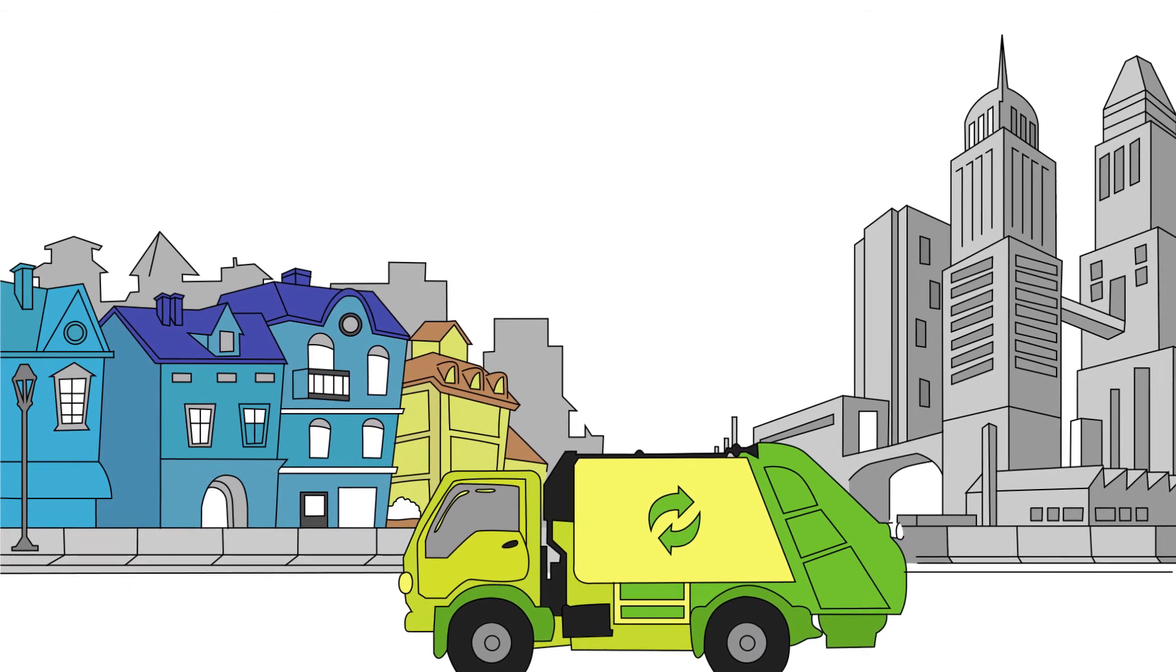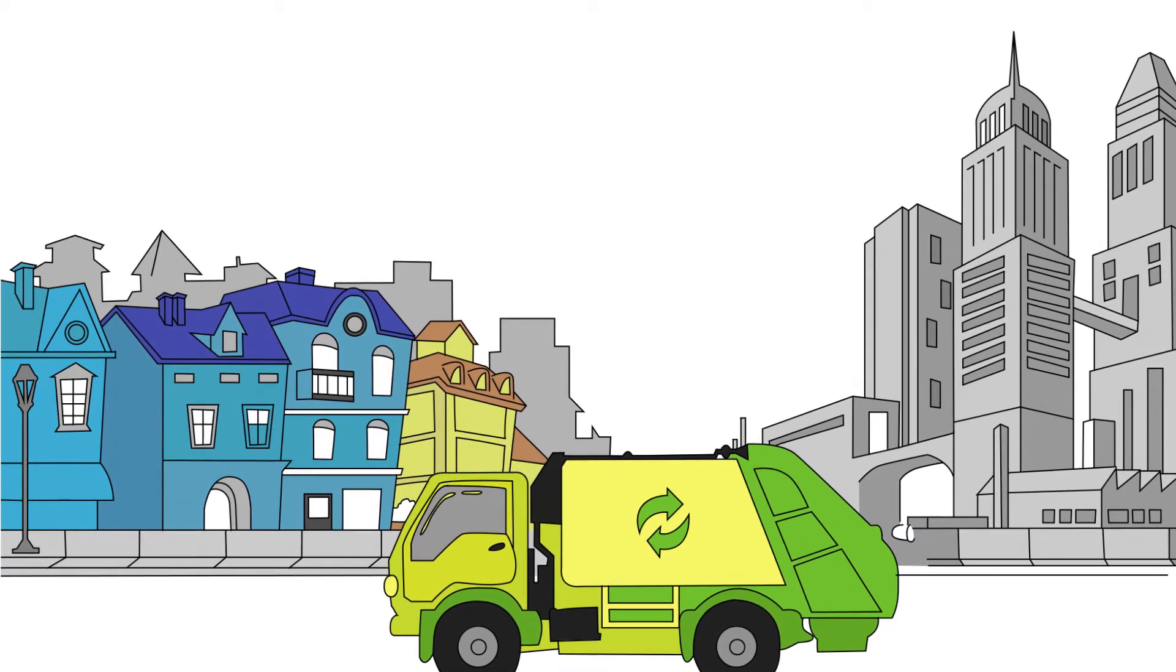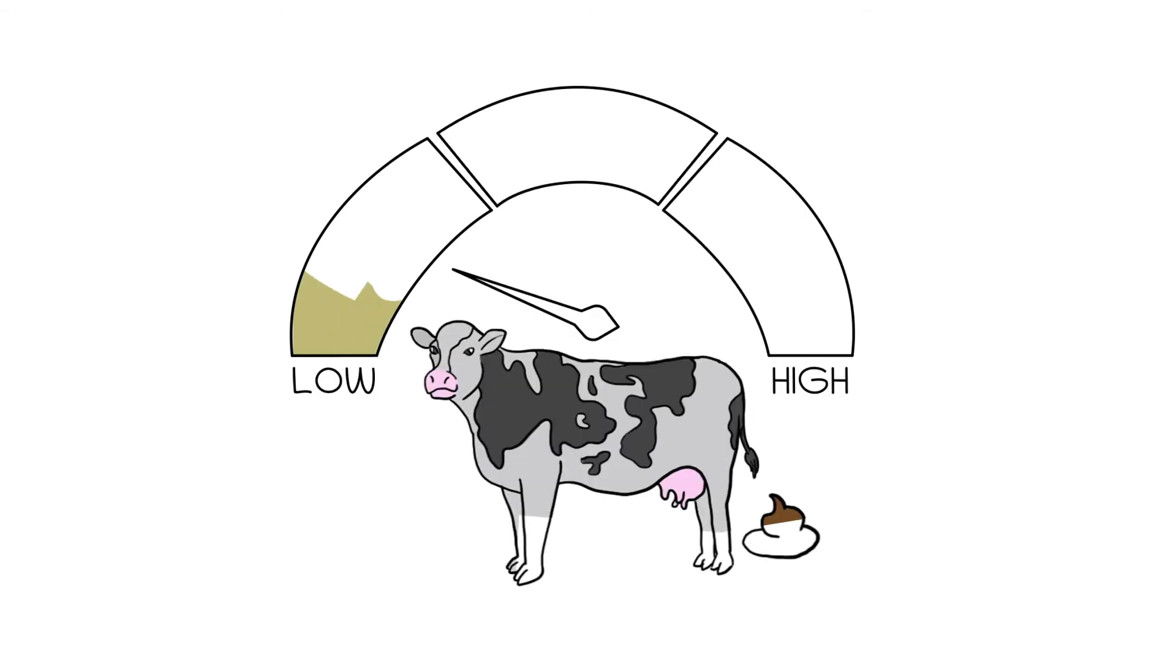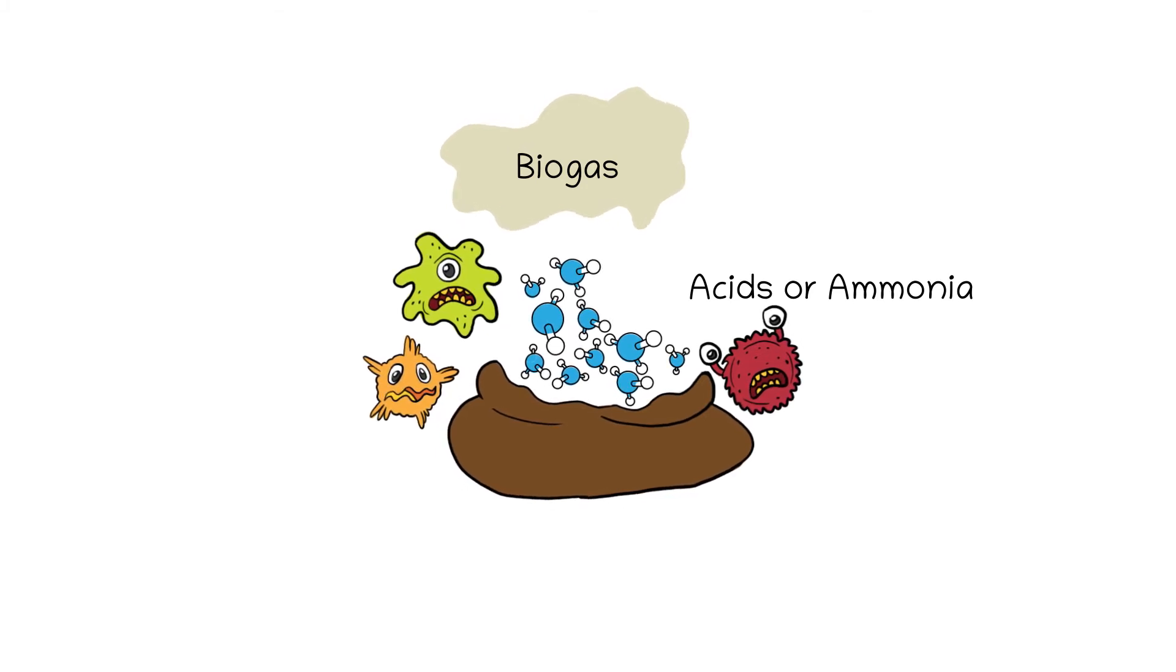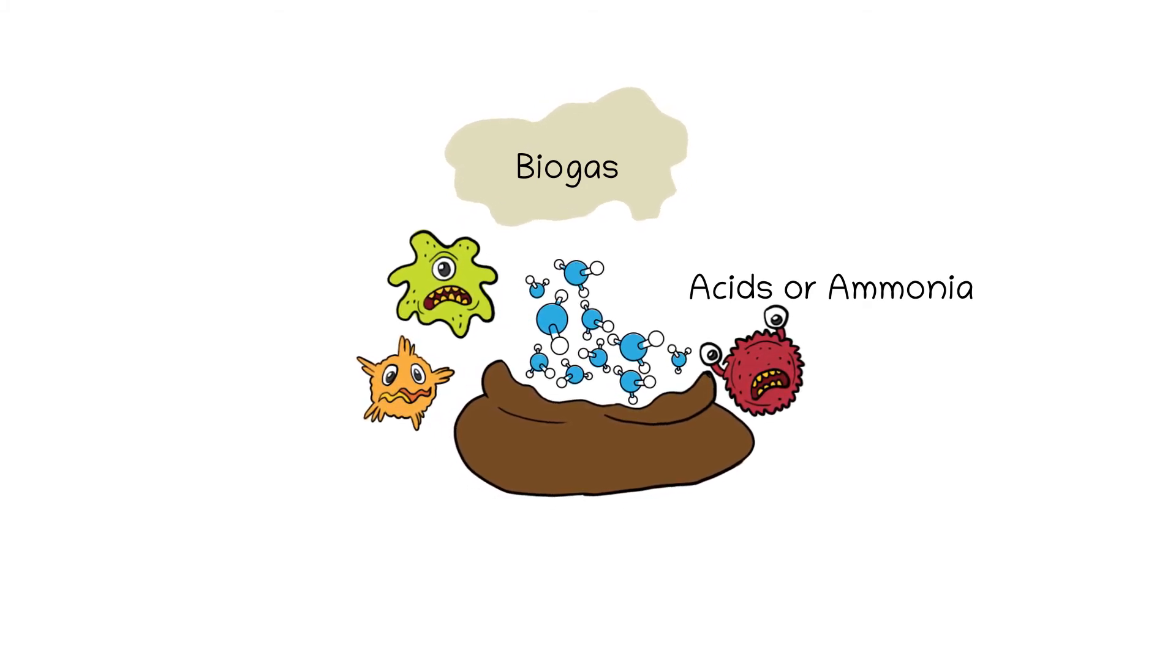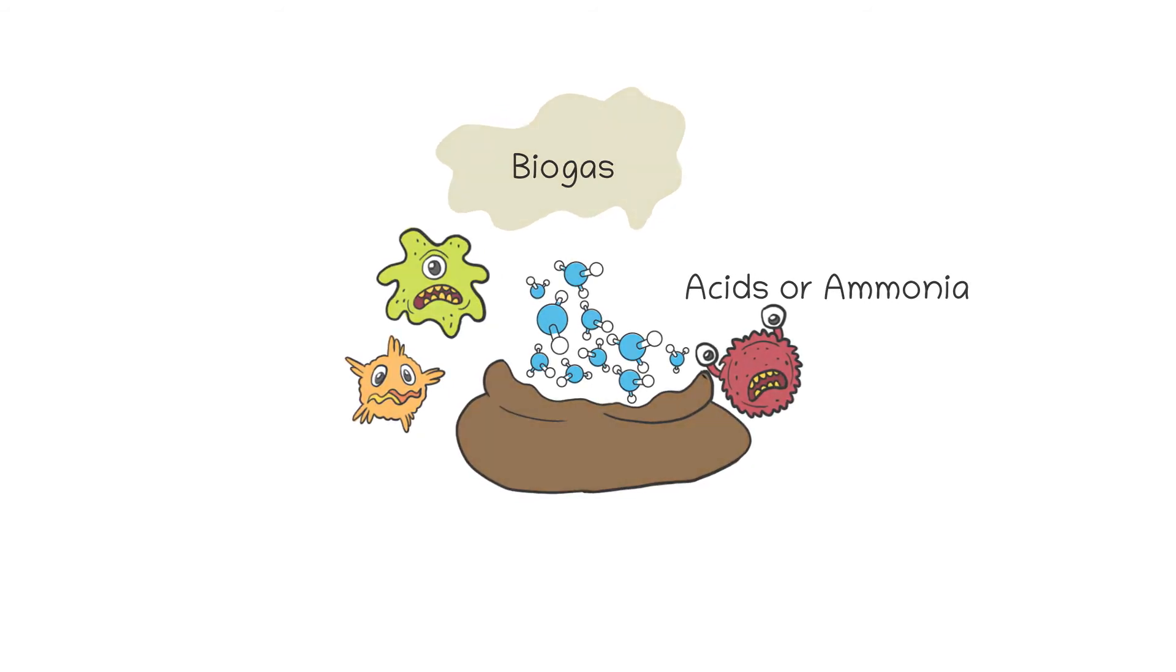We just need to overcome some critical barriers to widespread adoption. Low biogas production is a common issue for livestock manures. This is typically a consequence of excessive production of acids and ammonia during organic matter breakdown. These substances stress crucial microorganisms responsible for breaking down manure and producing biogas.